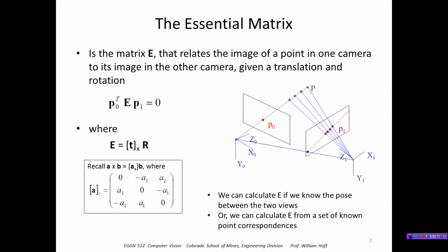Structure from motion. We've seen the essential matrix—it's the matrix E that relates the image of a point in one camera to its image in the other camera, given a translation and a rotation. The essential matrix is composed as a 3x3 matrix from the translation and the rotation between the two views, where the translation is expressed as a 3x3 skew symmetric matrix.